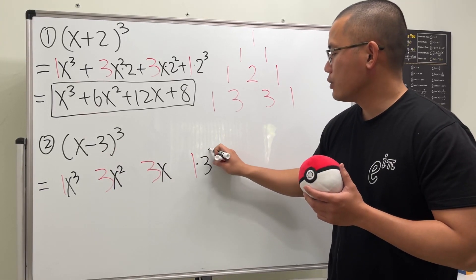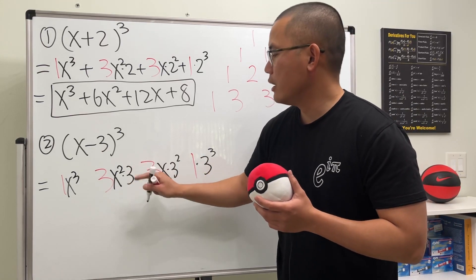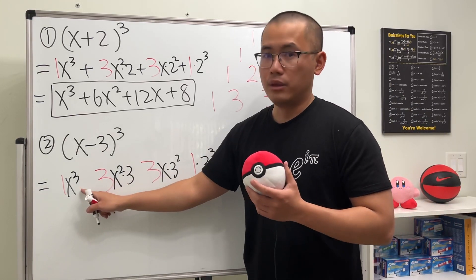And then I'm just going to look at the three right here: multiply by 3 to the third power, multiply by 3 to the second power, multiply by 3 to the first power, and multiply by no three.